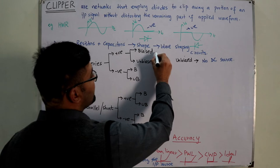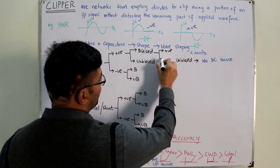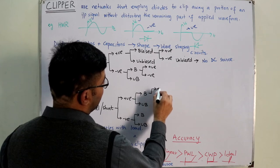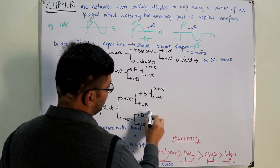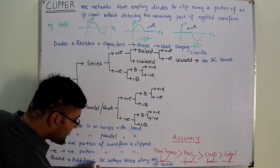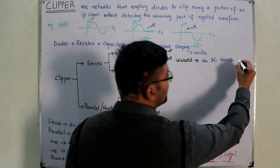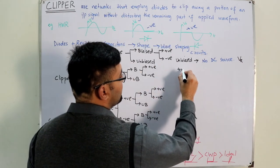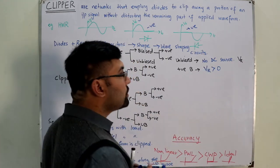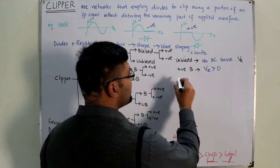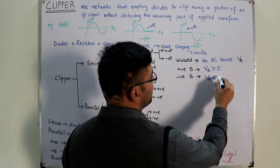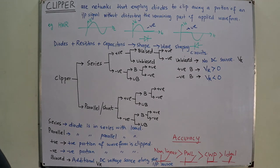In the biased category you have positive biasing and negative biasing. This additional DC source is represented by V_R, also called a reference source. Positive biasing means that V_R is greater than zero — I will show you the polarity while explaining it. Negative biasing means that the reference voltage V_R is less than zero.